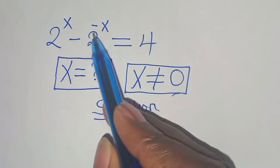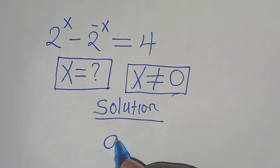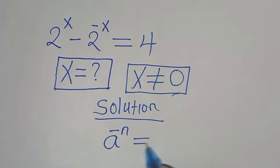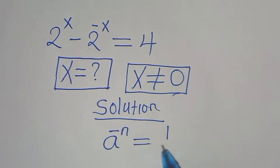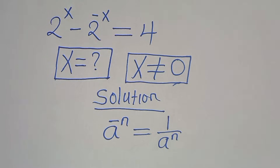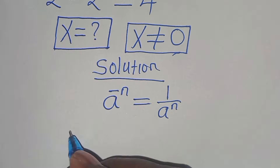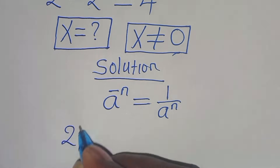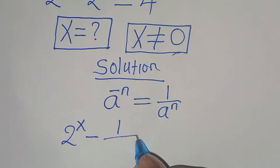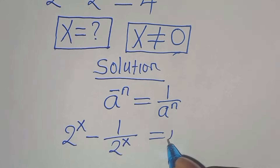Now, 2 to the power of minus x is in the form of a to the power of minus n, which we can express as 1 over a to the power of n. Applying this property, we have 2 to the power of x minus 1 over 2 to the power of x, and this is equal to 4.